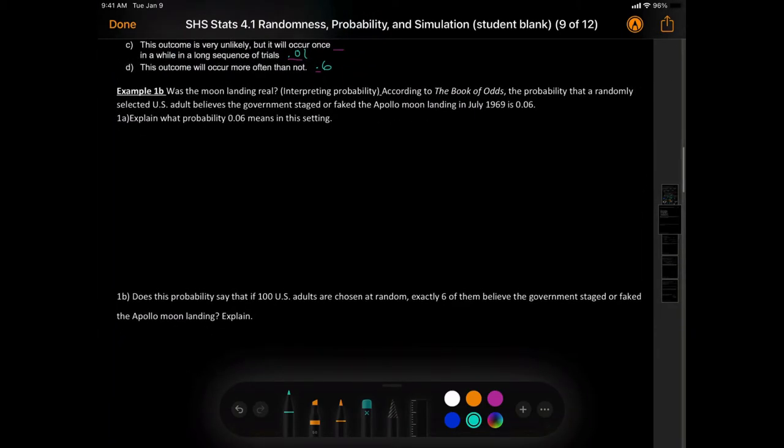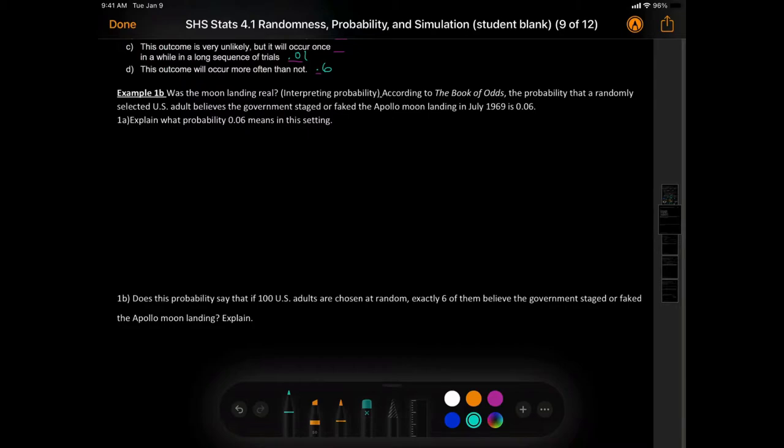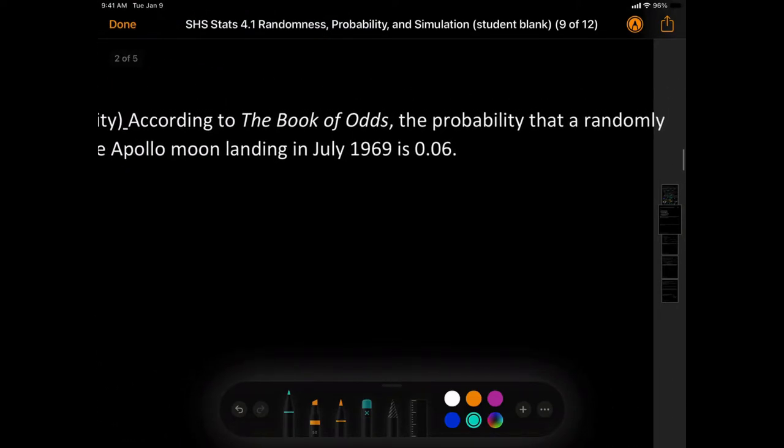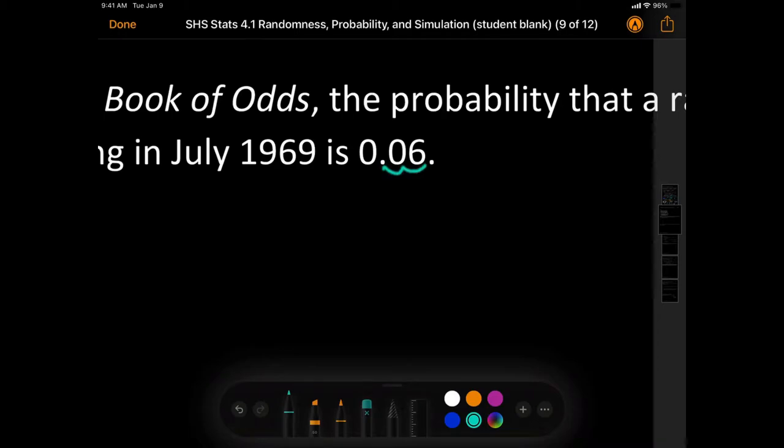Alright, let's try example 1b. We need to do the moon problem. Was the moon landing real? We're going to be focusing on interpreting probability. According to the Book of Odds, the probability that a randomly selected adult believes that the government staged or faked the Apollo landing in July 1969 is 0.06. Remember, quick lesson. This is 6 over, I moved the decimal two places, so that's 100. 6%. That's what I wanted to write.